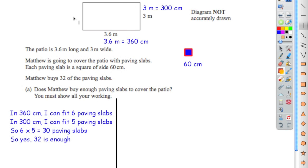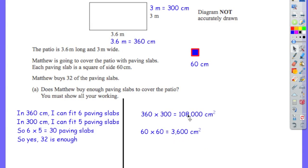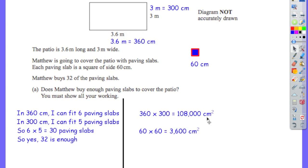The second way is working out the area of the rectangle and then dividing by the area of the paving slab, and seeing whether the result is less than 32. The area of the patio is 360 centimetres times 300 — it's just a rectangle — and that gives 108,000 square centimetres. The way to calculate it: 36 times 3 is 108, then multiply by 10 and by 100, giving a total multiplication by 1,000, hence 108,000.